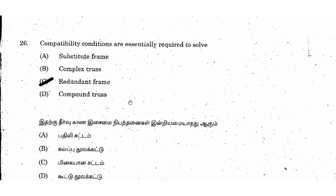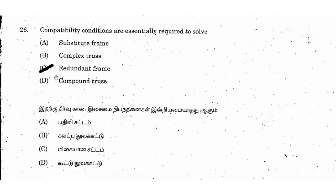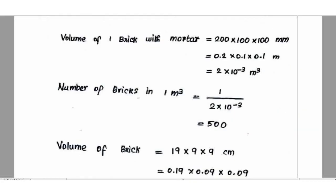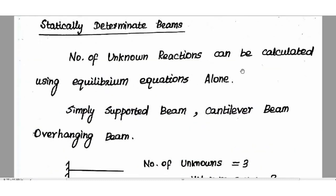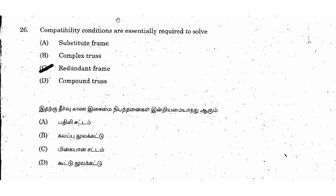Next question: compatibility conditions are essentially required to solve? The right answer is option C, redundant frames. For indeterminate structures, extra compatibility conditions are required beyond the equilibrium equations. These are statically indeterminate or redundant structures. Compatibility conditions are required to calculate unknown equations that exceed the equilibrium equations in redundant frames.